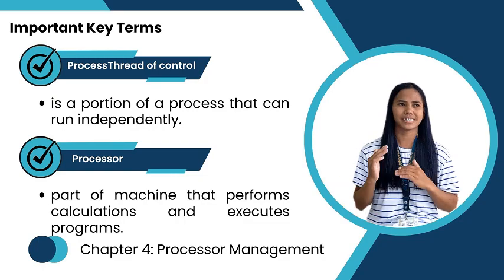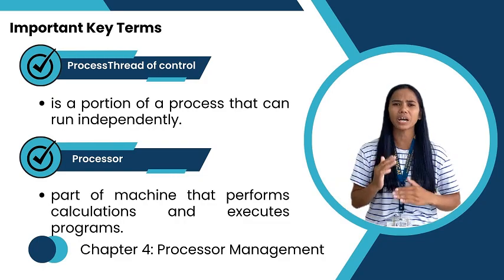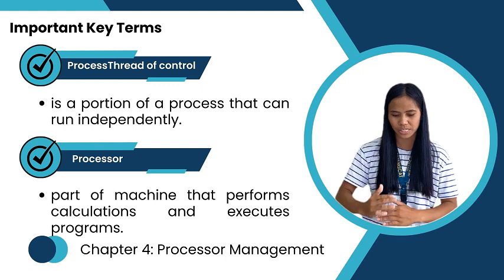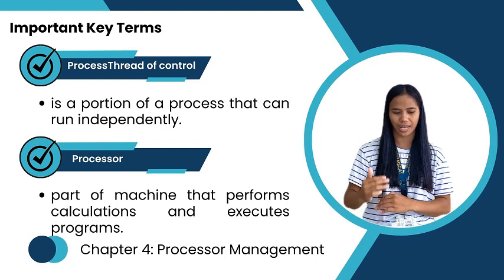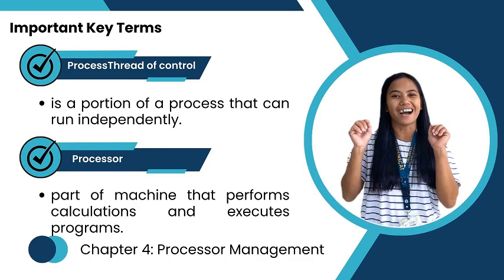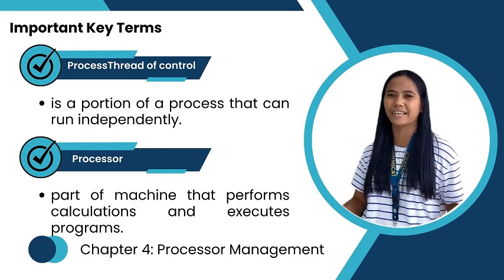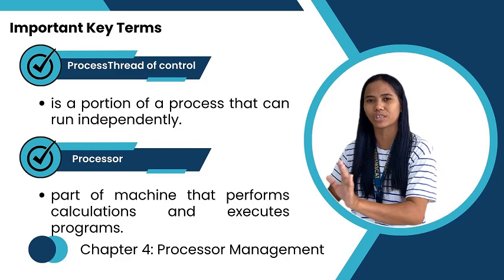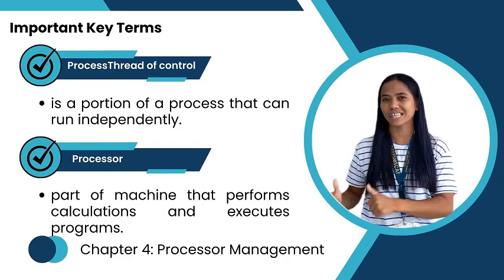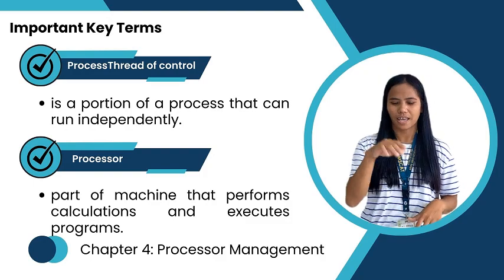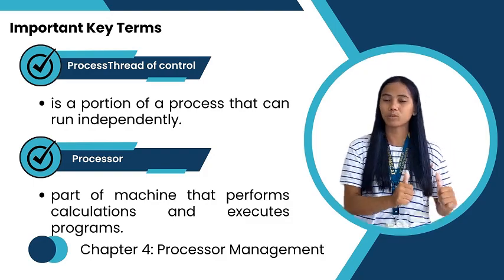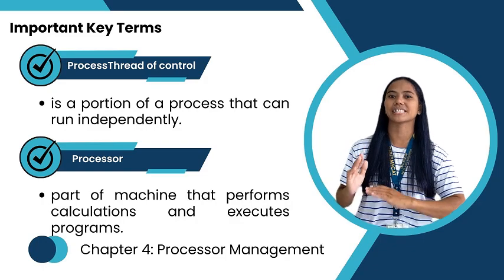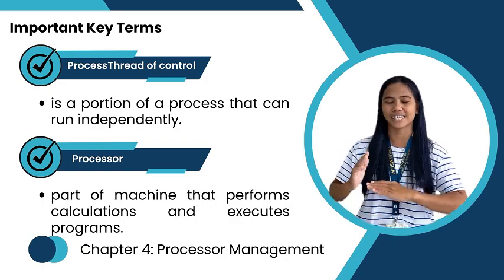Next is the processor, or the CPU — the Central Processing Unit. The processor is the hardware component responsible for executing instructions of a computer program. The CPU is known as the brain of the computer. It handles virtually everything from a simple mouse click or keyboard input, up to executing instructions we call programs.